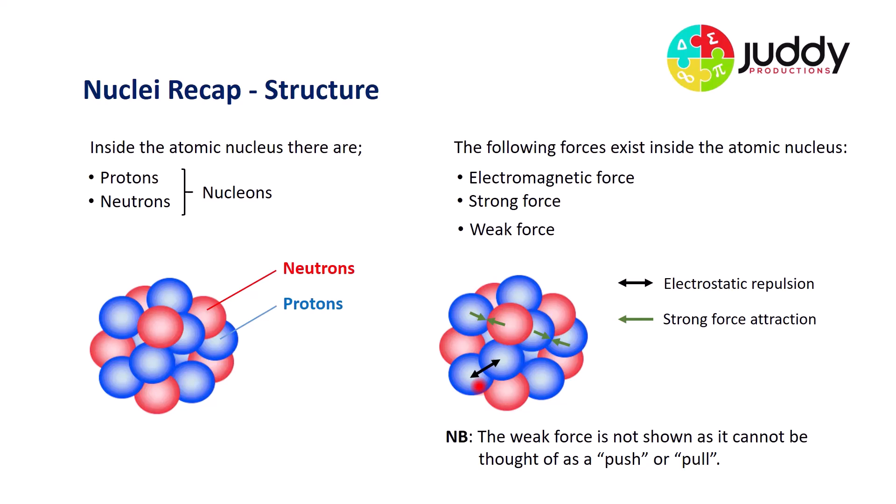So first of all, we can see the electromagnetic force, which creates an electrostatic repulsion between two positively charged protons. They're pushing away, they're repelling each other. We then have what we call the strong nuclear force, and they exist between any two nucleons, whether it be a proton and a neutron, whether that be two protons, or indeed two neutrons.